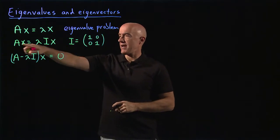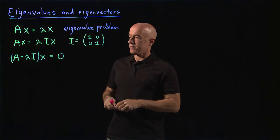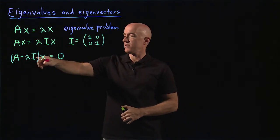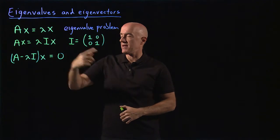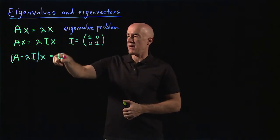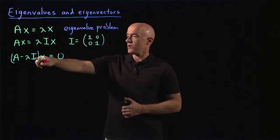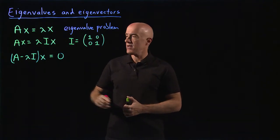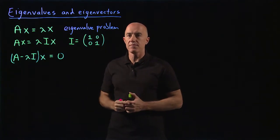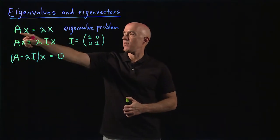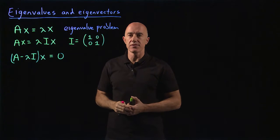You pull lambda I x to the left and factor out x on the right. You could solve this for x by taking the inverse of the matrix A minus lambda I and multiplying both sides on the left. But multiplying any matrix by the zero column vector always gives the zero column vector. So if A minus lambda I were invertible, the only solution would be x equals the zero column vector, which is not an interesting solution to the eigenvalue problem.